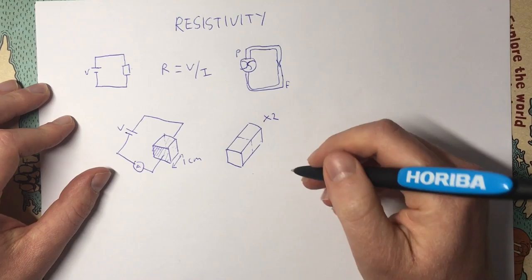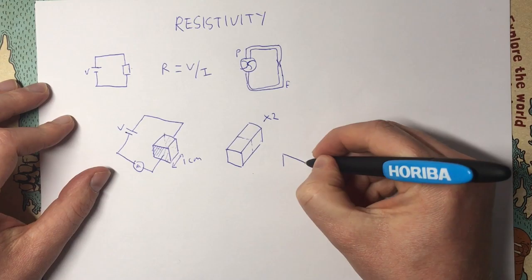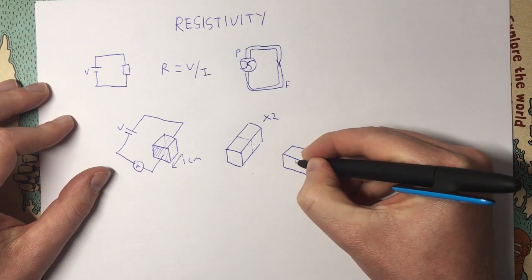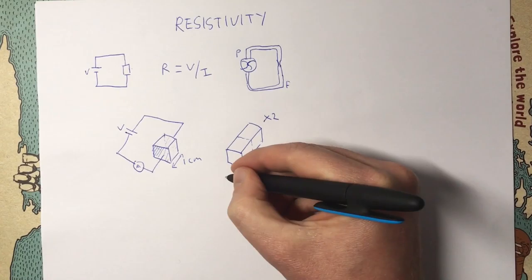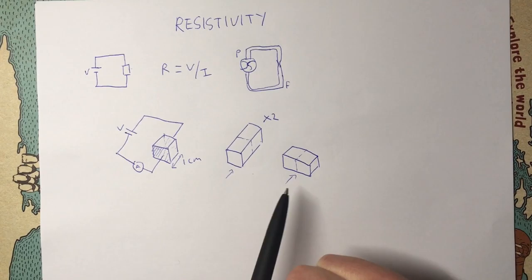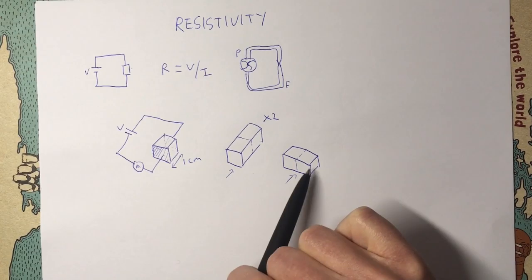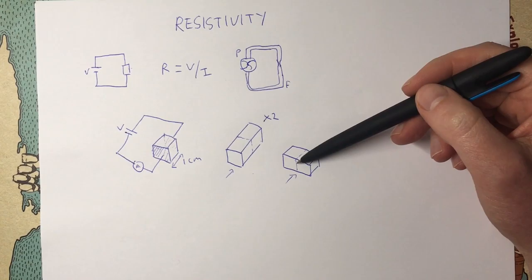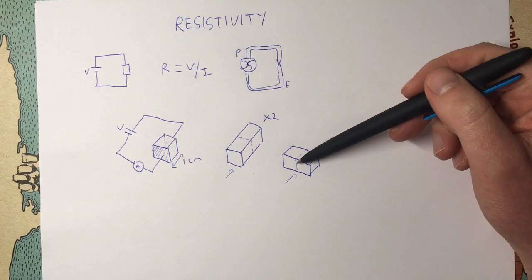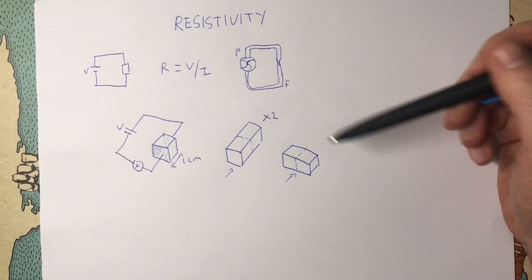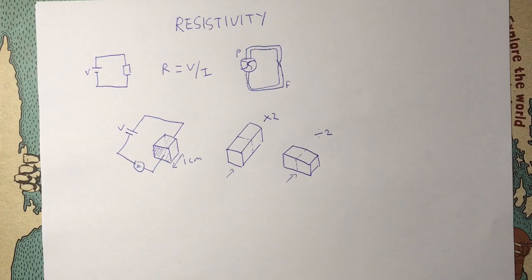What happens if we then stack these cubes side by side? Now we've got current trying to flow in one direction, but compared to a single cube we've got twice as much area to flow through. Coming back to our water analogy, this is just like opening up the restriction. By having twice the surface area, we've halved the amount of restriction to current flow. So arranging the cubes side by side should halve the resistance.